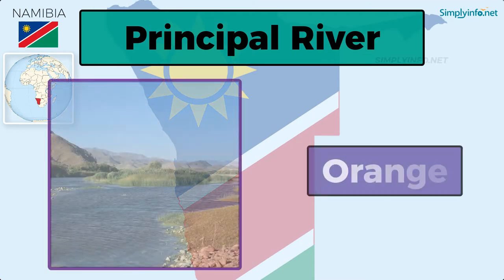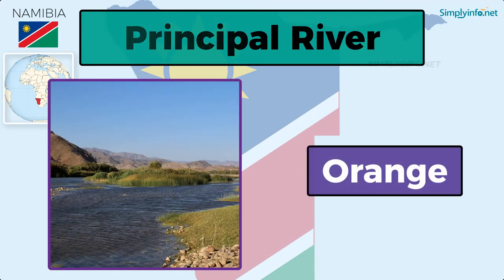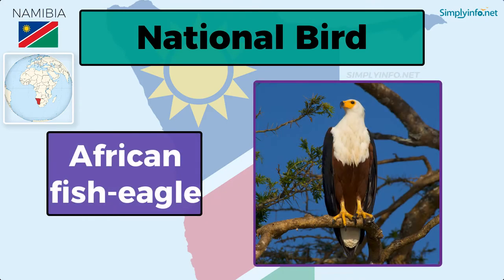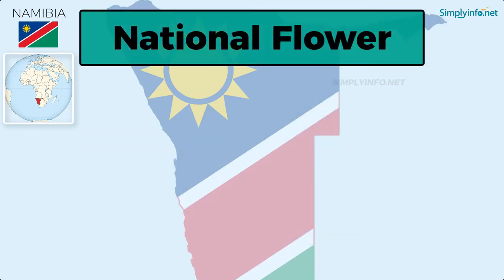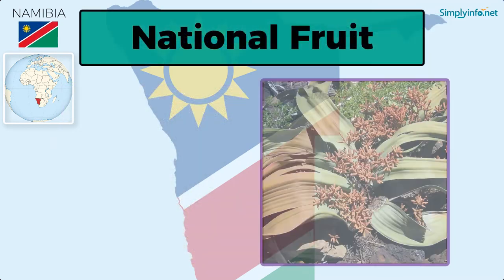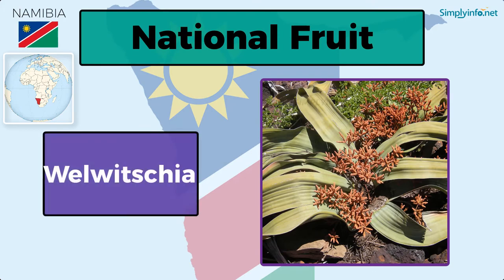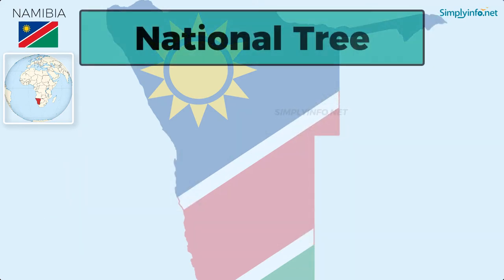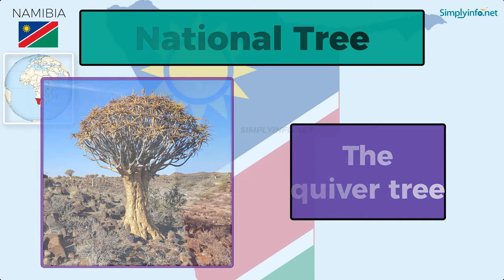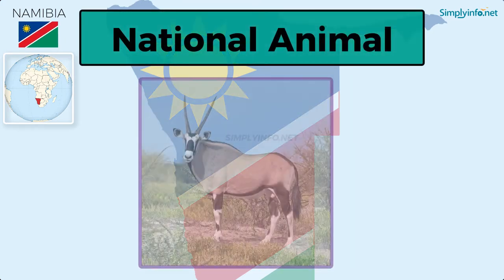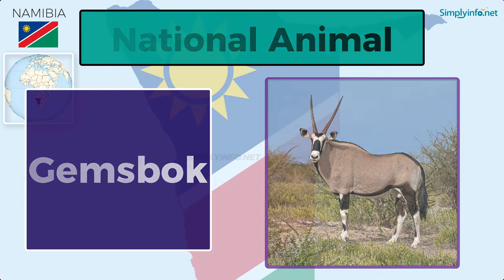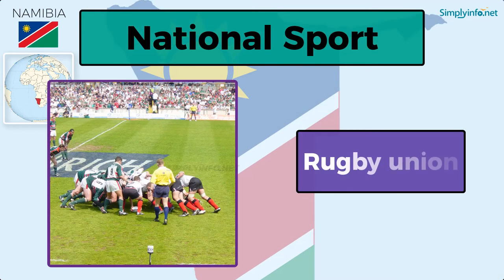Principal river: Orange. National bird: African fish eagle. National flower: Welwitschia mirabilis. National fruit: Welwitschia. National tree: The quiver tree. National animal: Gemsbok. National sport: Rugby union.